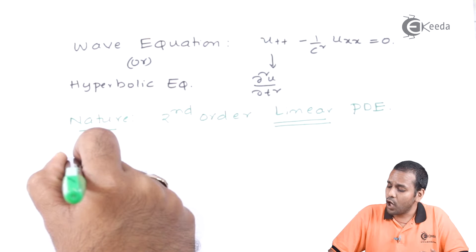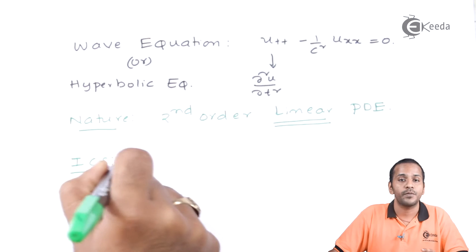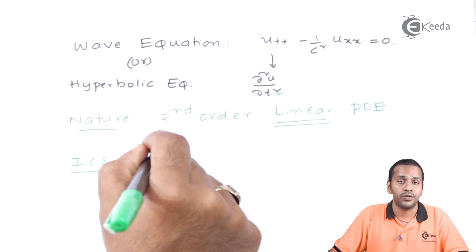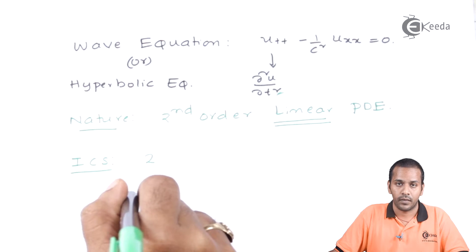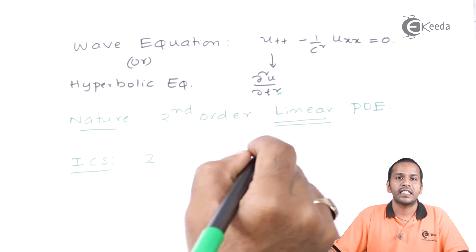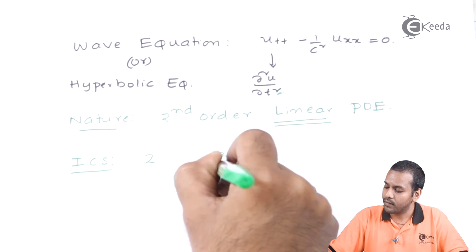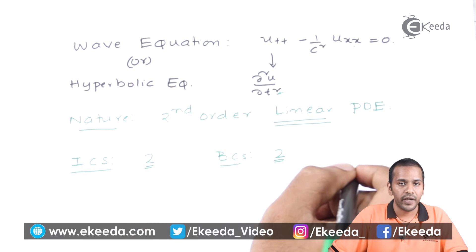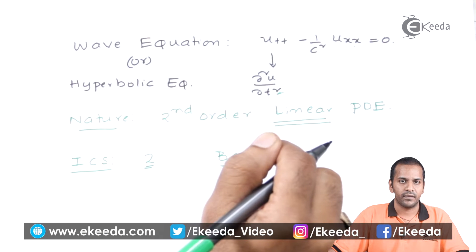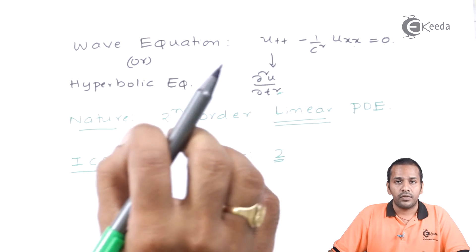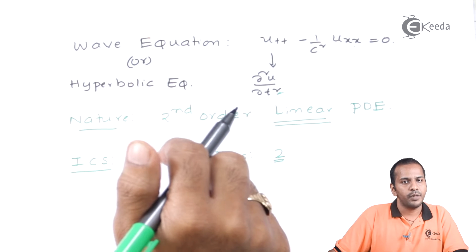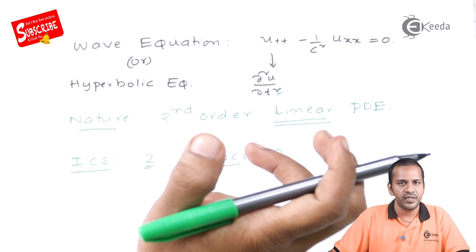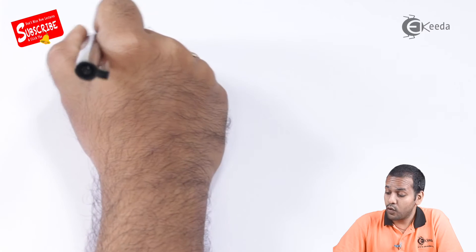How many initial conditions do we need to solve this problem? The order of the time derivative is 2, so we need two initial conditions. The order of the space derivative is also 2, so we need two boundary conditions. Initial boundary value problems are problems dependent on both time and space, requiring both initial and boundary conditions depending on the order of the equation.